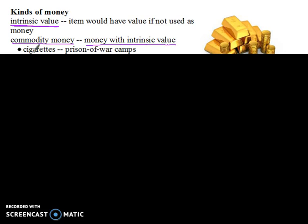One example of this is cigarettes. Cigarettes in the past have been used as commodity money, particularly in prisoner of war camps during World War II. Cigarettes were often used as a medium of exchange to buy and sell goods and services. People from the outside would sneak various different goods — chocolate was a favorite — into the war camps, and people would buy these things with cigarettes. So cigarettes emerged as a form of commodity money.